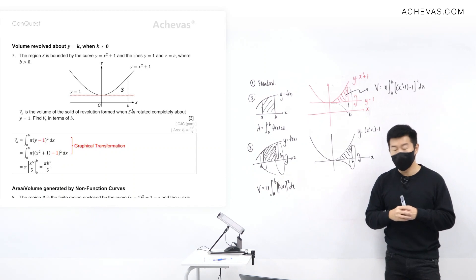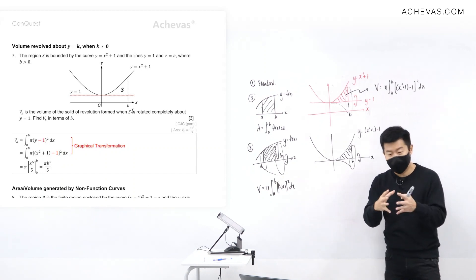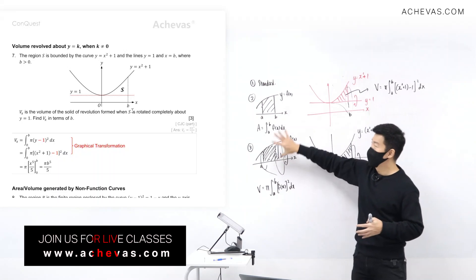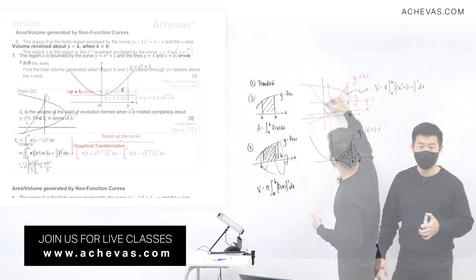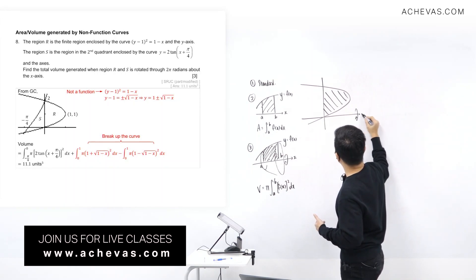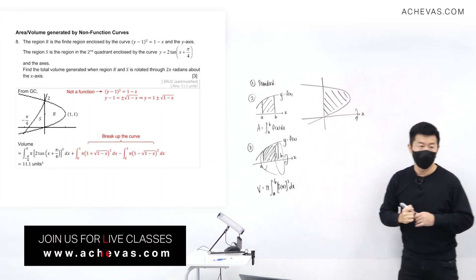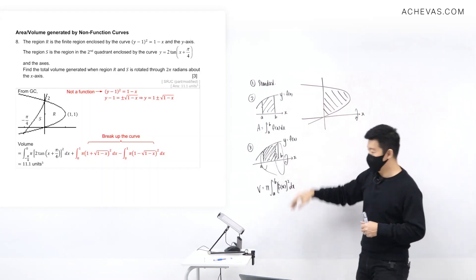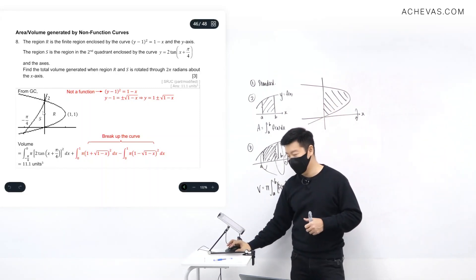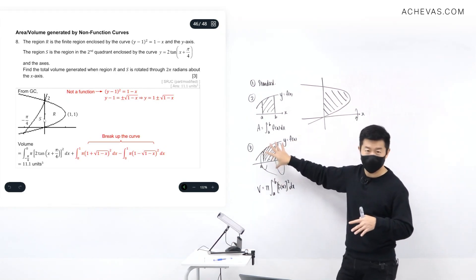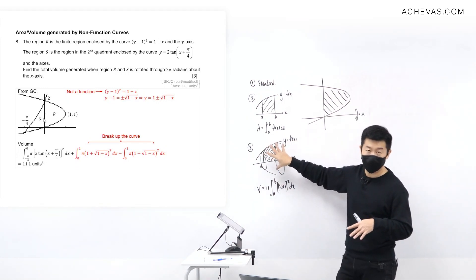Area and volume questions will test you on scenarios where you cannot apply any of the three standard formulas directly. For instance, region R is going to be rotated about the x-axis. Region S, which is also rotated about the x-axis, is fine — region S is exactly the same type of scenario, so no problem there.